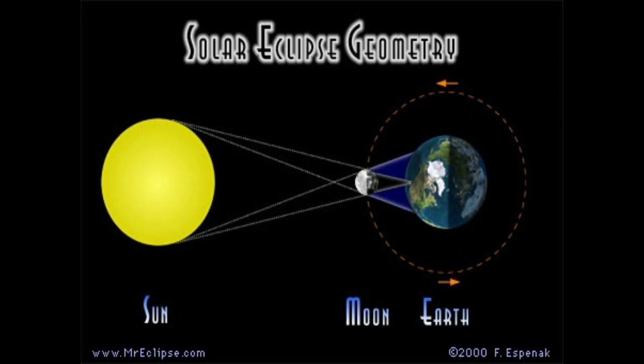Now let's look at the solar eclipse. To review: in a lunar eclipse, the Earth casts the shadow. In a solar eclipse, the moon casts the shadow. So the moon has to be in between both the sun and the Earth. You can see where the moon is situated between the sun and the Earth, casting its shadow on the Earth. There is a penumbra on the outer edges and a smaller umbra in the center.